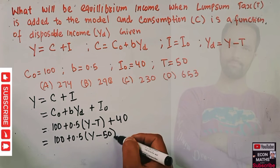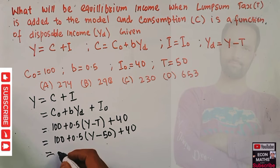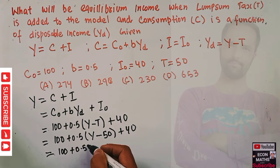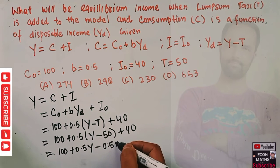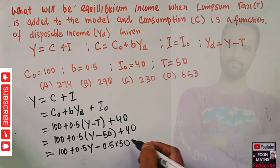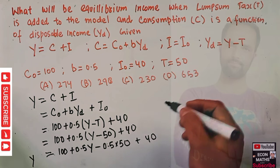Solving again, we have 100 plus 0.5 Y minus lump sum tax 50, so minus 50, plus 40. Solving again, 100 plus 0.5 Y—0.5 is multiplied to each term in the brackets—so 0.5 times 50 plus 40.